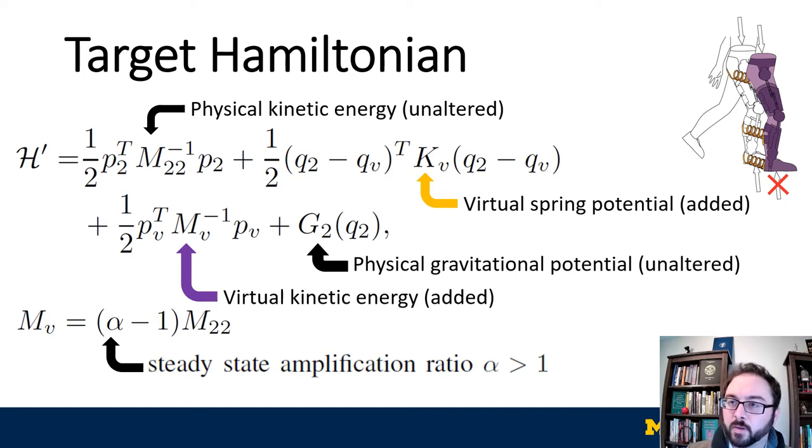We define our target Hamiltonian to combine four terms. The kinetic energy of the real leg, based on real leg mass matrix M sub 2,2, and real leg momentum P sub 2. The potential energy of the virtual spring, based on virtual spring constant K sub V, real leg joint angles Q sub 2, and virtual joint angles Q sub V.